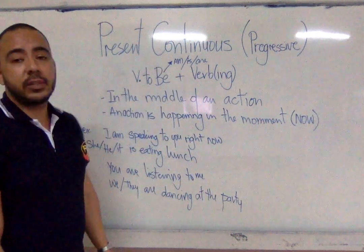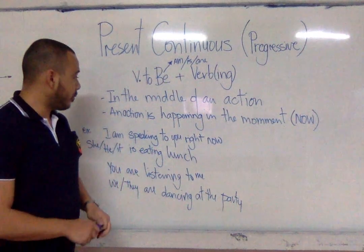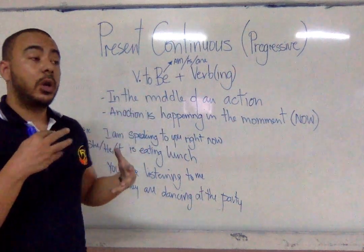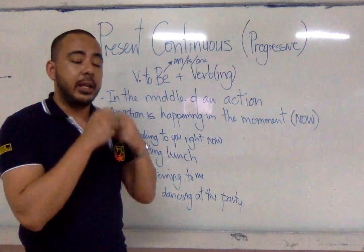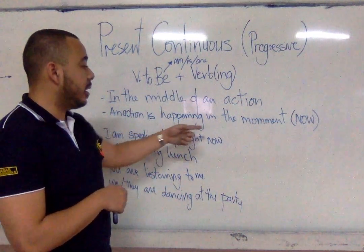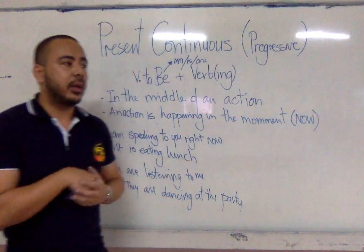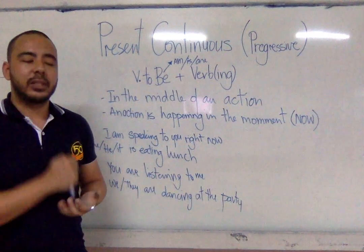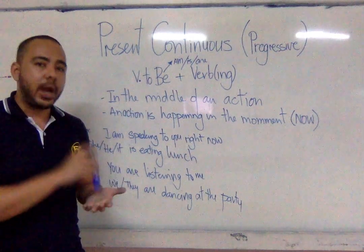So what is present continuous? Present continuous is when we are in the middle of an action. Something is taking place, something is happening and we're still doing it. An action is happening in the moment, right now. A different way of saying it: we use present continuous when we want to talk about an action that's taking place right now.